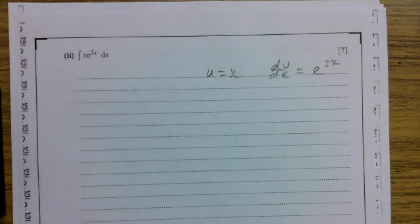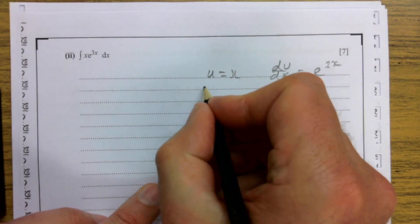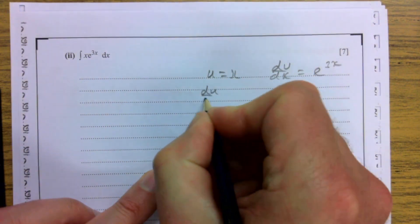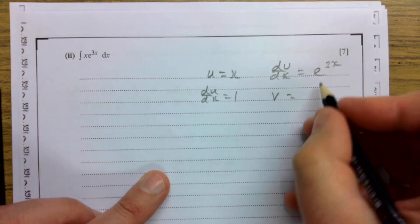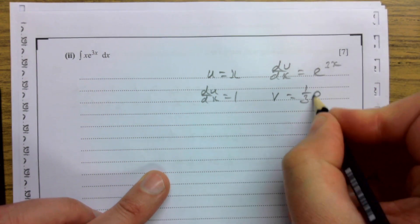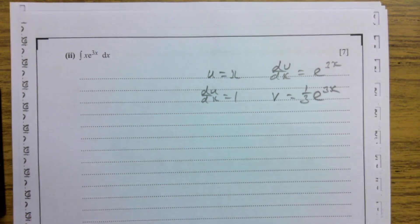Differentiating this I get du by dx which just gives me one, and then v integrating that is going to be a third e to the 3x. Again I hope that makes sense, there's a bit of backwards differentiation going on there.